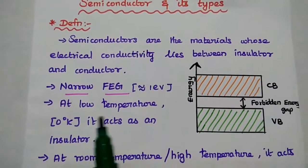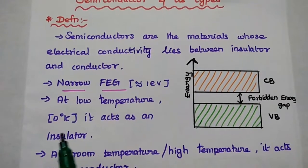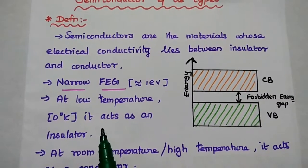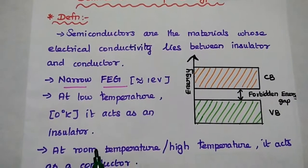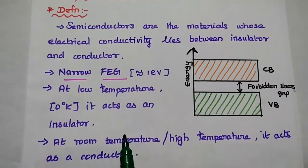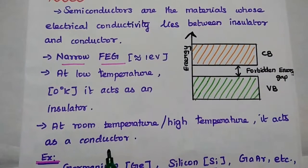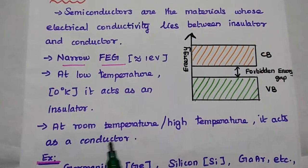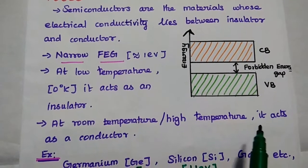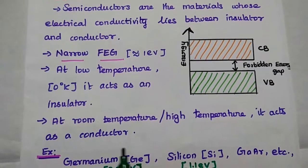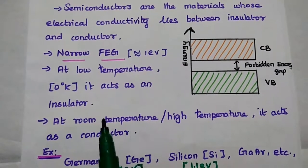At very low temperature, for example 0 degrees Kelvin, the semiconductor material acts as an insulator. It does not conduct at very low temperature, but at room temperature or very high temperature, the semiconductor material can act as a conductor. That's why it is called a semiconductor.